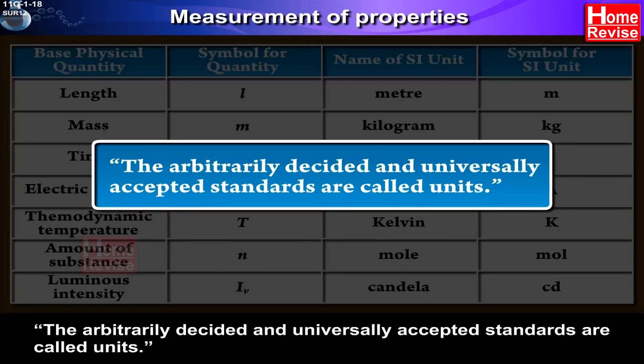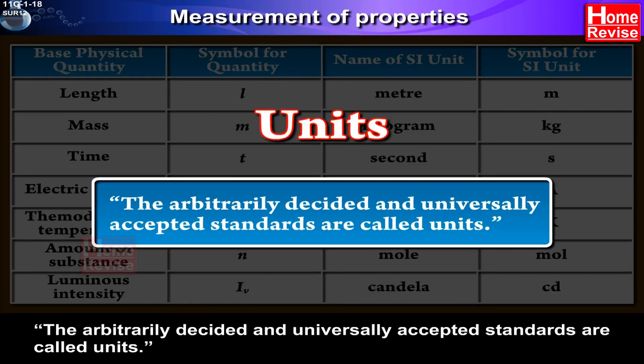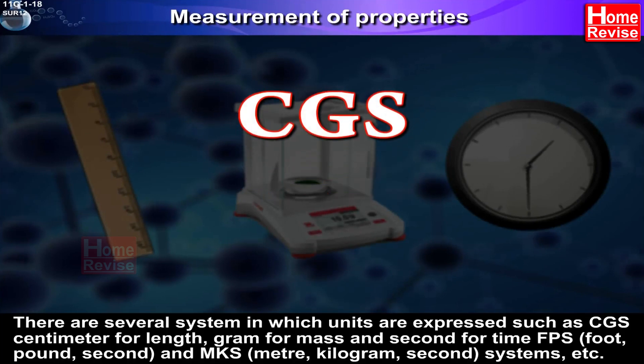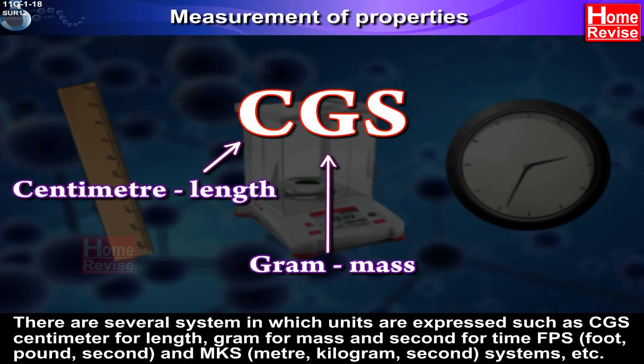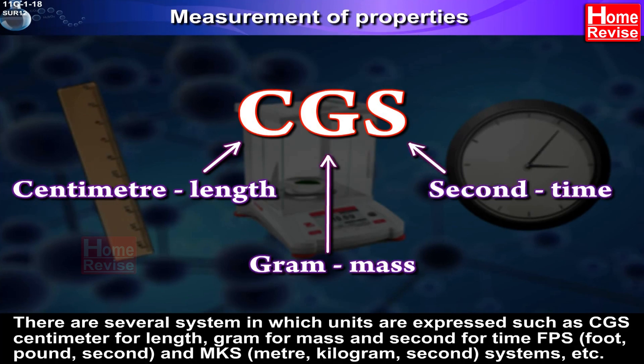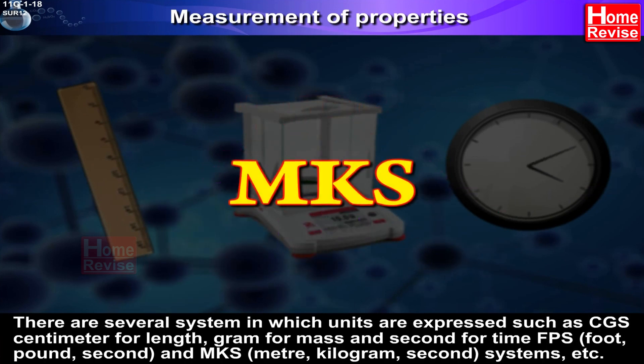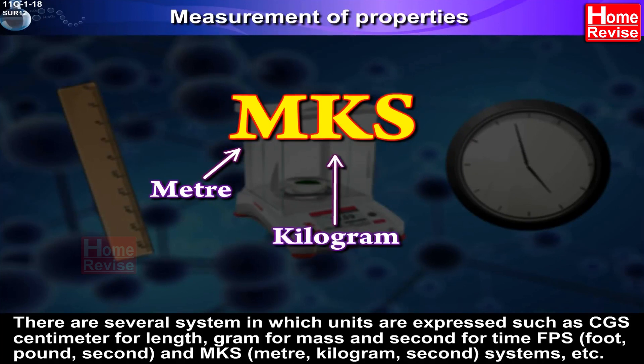The arbitrarily decided and universally accepted standards are called units. There are several systems in which units are expressed such as CGS (centimeter for length, gram for mass, and second for time), FPS (foot, pound, second), and MKS (meter, kilogram, second) systems, etc.